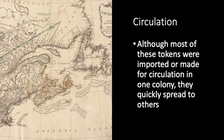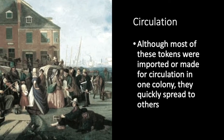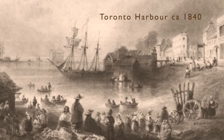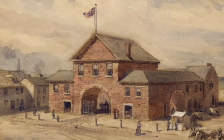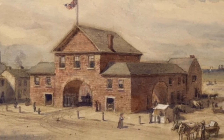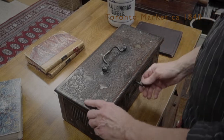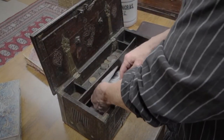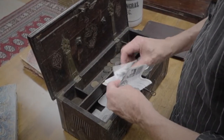Since all the colonies experienced coin shortages, tokens imported into one colony quickly spread into the others. Consequently, tokens that were very common in Montreal soon found their way to Toronto, where they circulated alongside tokens that had been imported specifically to Upper Canada. But even with all the new imports of copper tokens, there was a serious shortage of small change, and a bewildering array of coins and tokens filled the gap.